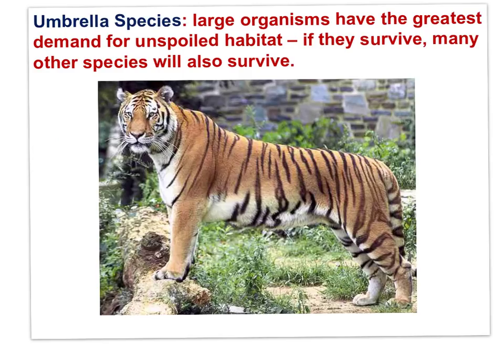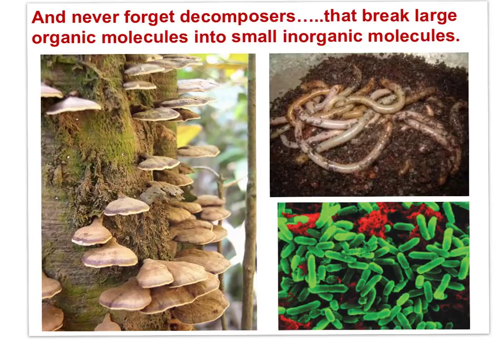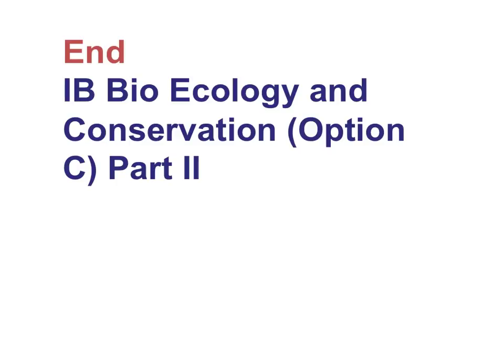In a community, different species play different but uniquely important roles. For example, the tiger is a large animal requiring many square kilometers of territory. Because of its demand for large tracts of unspoiled habitat, many other species will also survive if the tiger survives — the tiger might be called an umbrella species. And let's not forget the unique role of decomposers, which break large organic molecules of dead organisms into smaller, inorganic molecules. Without decomposers, the world would be littered with the carcasses of every organism that had ever lived and died. That brings us to the end of IB Biology, Ecology and Conservation, Option C, Part 2.